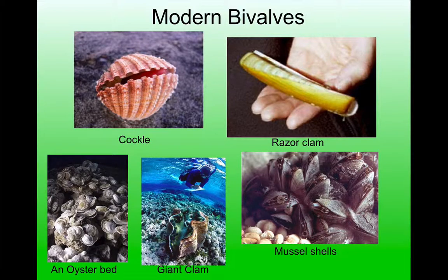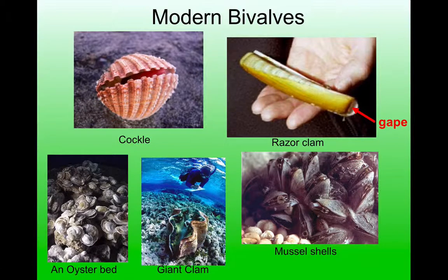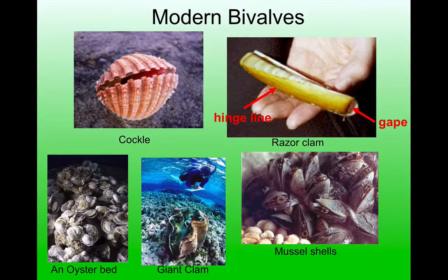The razor clam has a couple of features worth noting. The first is a gape — when the two shells are together, there is a large gap at the top and bottom of the shells. This allows the razor clam's foot to extend out the bottom so it can dig very quickly and deeply into mud, and at the top end it can extend a feature called a siphon. This is an adaptation for burying itself quickly and deeply within sediment. Another obvious feature of the razor shell is its very long hinge line — the point where the two shells are joined together.